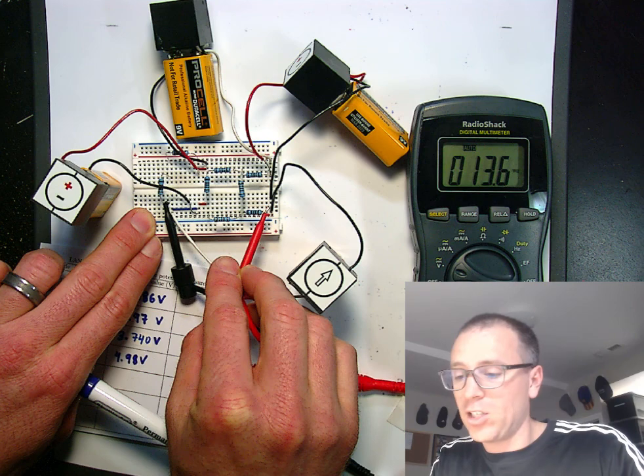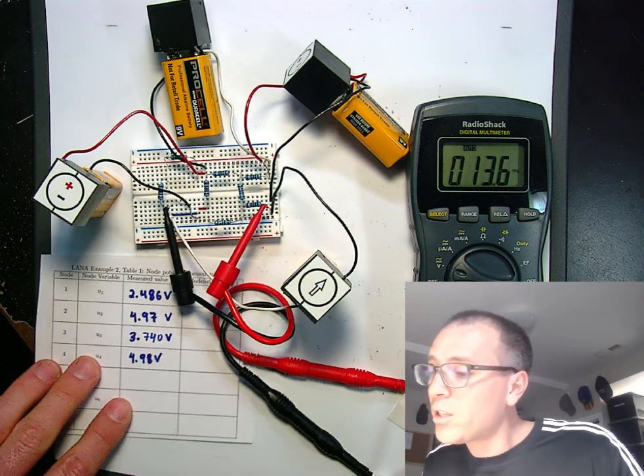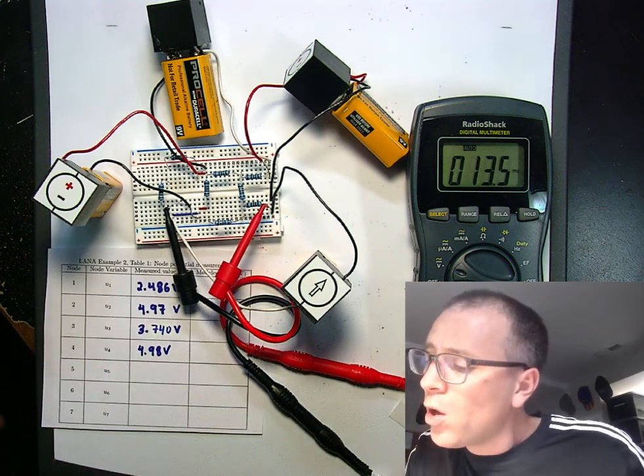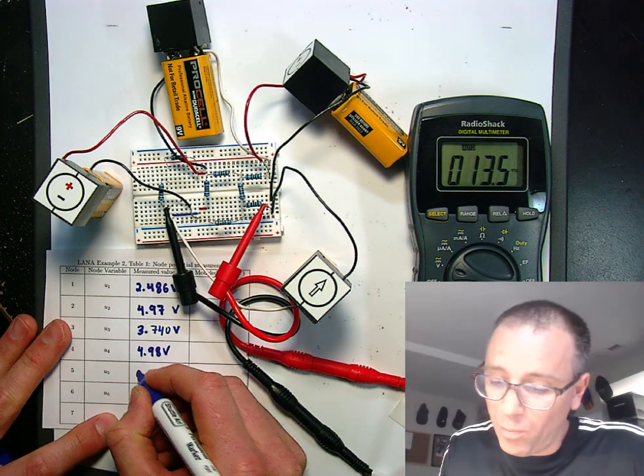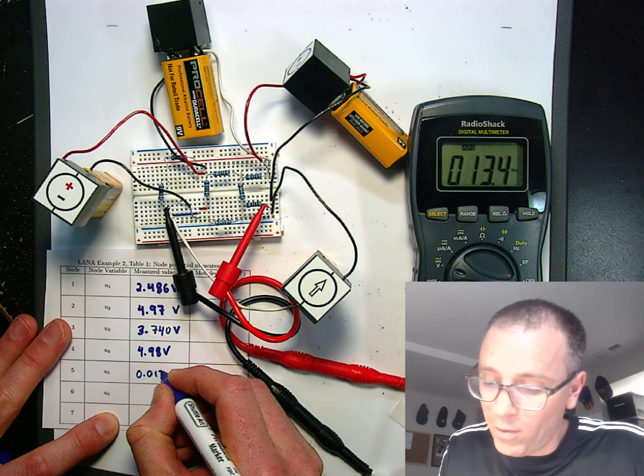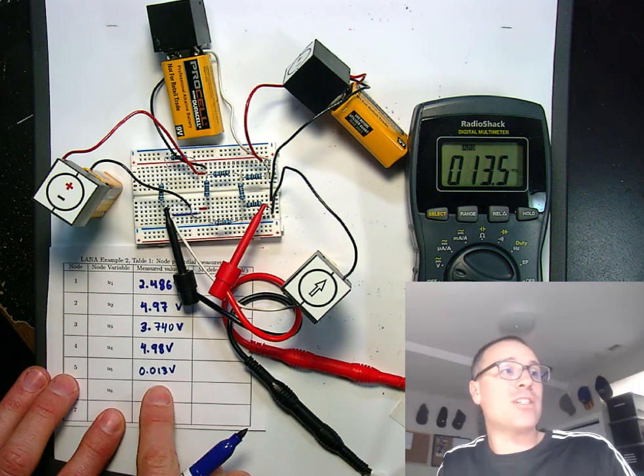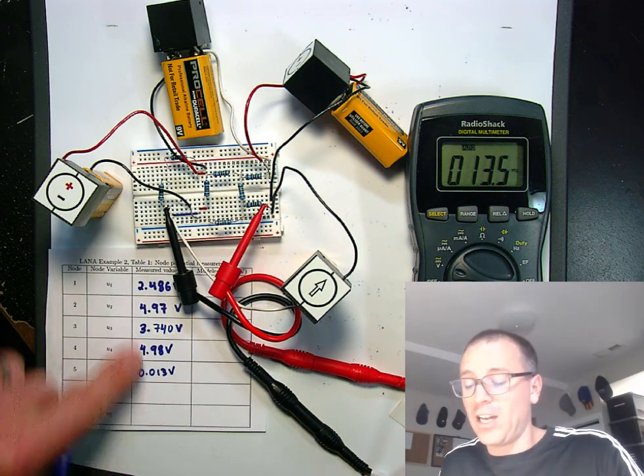And then we're going to go on to node, I think this is node 5, which looks like, wow, it's in millivolts. So millivolts would be, it looks like 0.013 volts. So that's really close to zero from the standpoint of these other measurements.